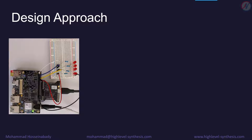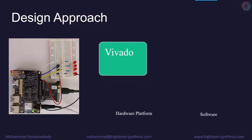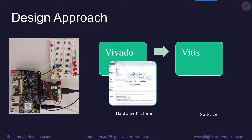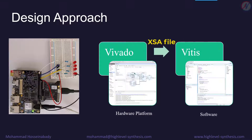The design flow consists of two steps: hardware platform design and software design. For the hardware, we use Zynq's Vivado toolset. The hardware design should be encapsulated into an XSA file to be used later by the software design flow. And for the software code, we will use the Vitis toolset.